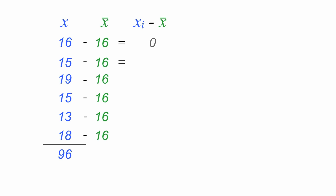15 minus 16 is equal to negative 1. 19 minus 16 is equal to 3. 15 minus 16 is negative 1 again. And so on and so forth we go. Make sense? By the way, if you sum all these values of this column, it should always equal 0 or be a very small number if you're rounding.